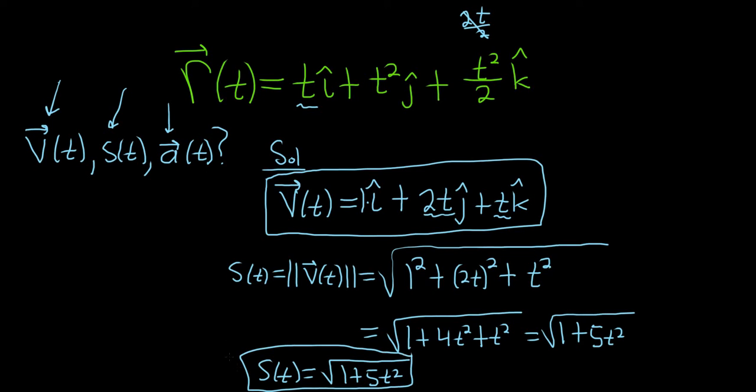The acceleration is the derivative of velocity, the rate of change of velocity. To find acceleration, differentiate the velocity. Differentiating 1 gives 0 i hat. Differentiating 2t gives 2 j hat. Differentiating t gives 1 k hat.